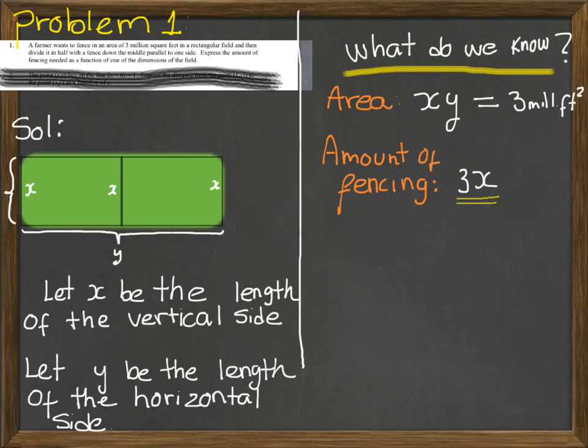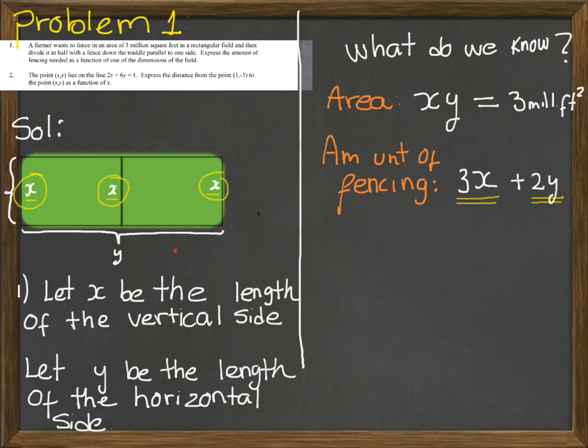And also we know a formula to calculate the fencing. So first we have to add 3 times x, because we have 3 sides of the fence that measure x, and then plus 2y which are 2 times the horizontal side. So we want to minimize exactly the amount of fence.